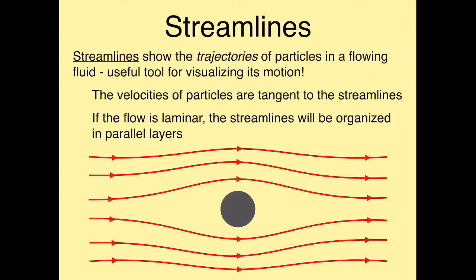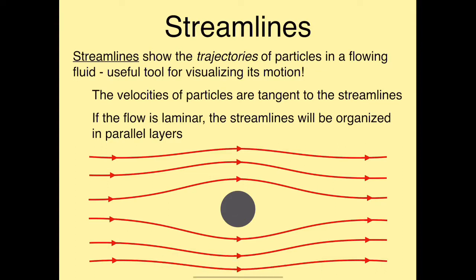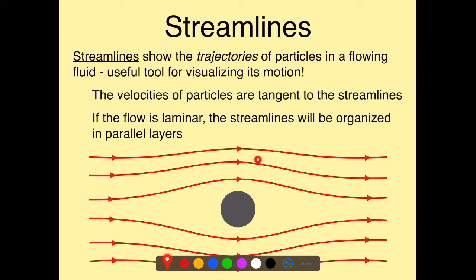A few things to note: the velocities of particles are always tangent to the streamlines. So if I have a particle of fluid right here, it's moving straight to the right. If I have a particle over here, it's moving to the right but also a little bit downward. If we're dealing with a laminar flow, the streamlines on a diagram are always organized in parallel layers. A turbulent flow, on the other hand, would look a lot more complicated. In this class, we're always dealing with laminar flow.